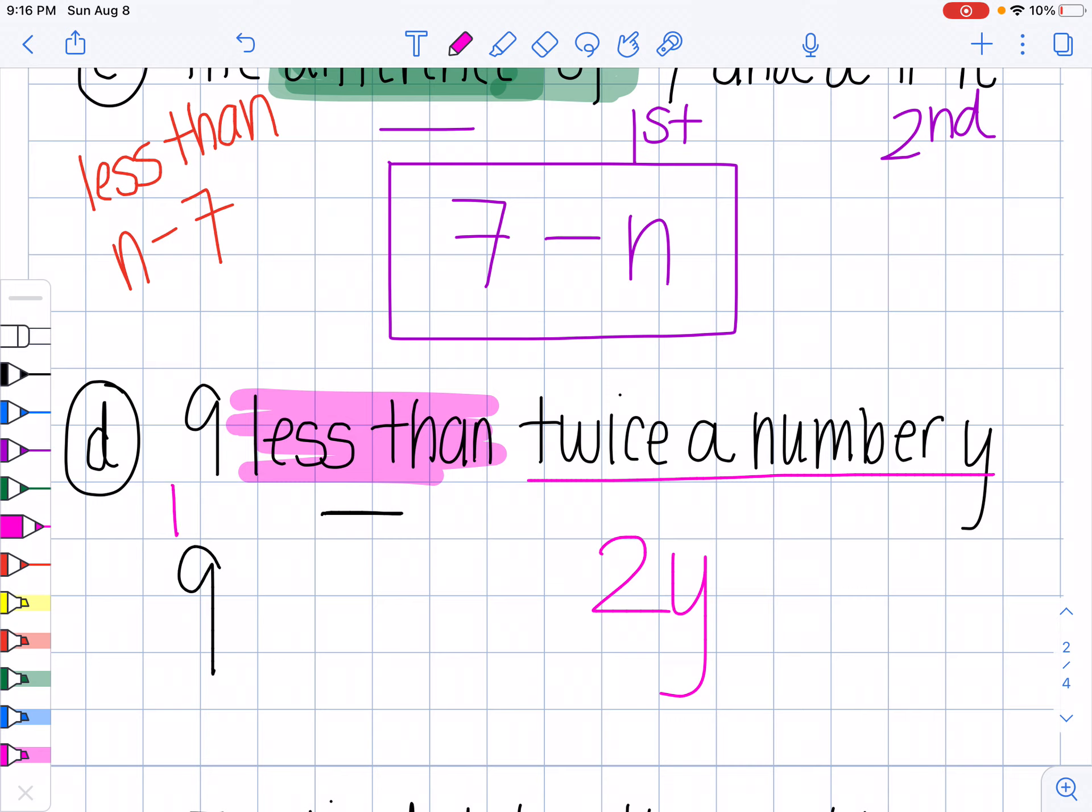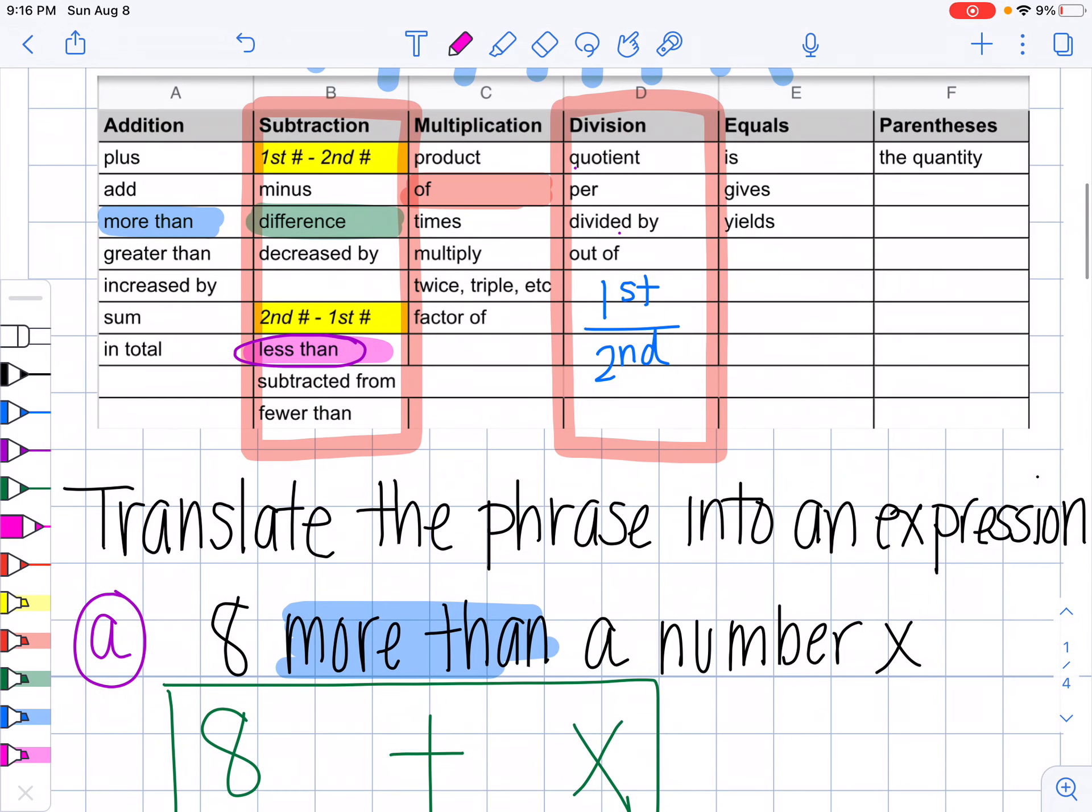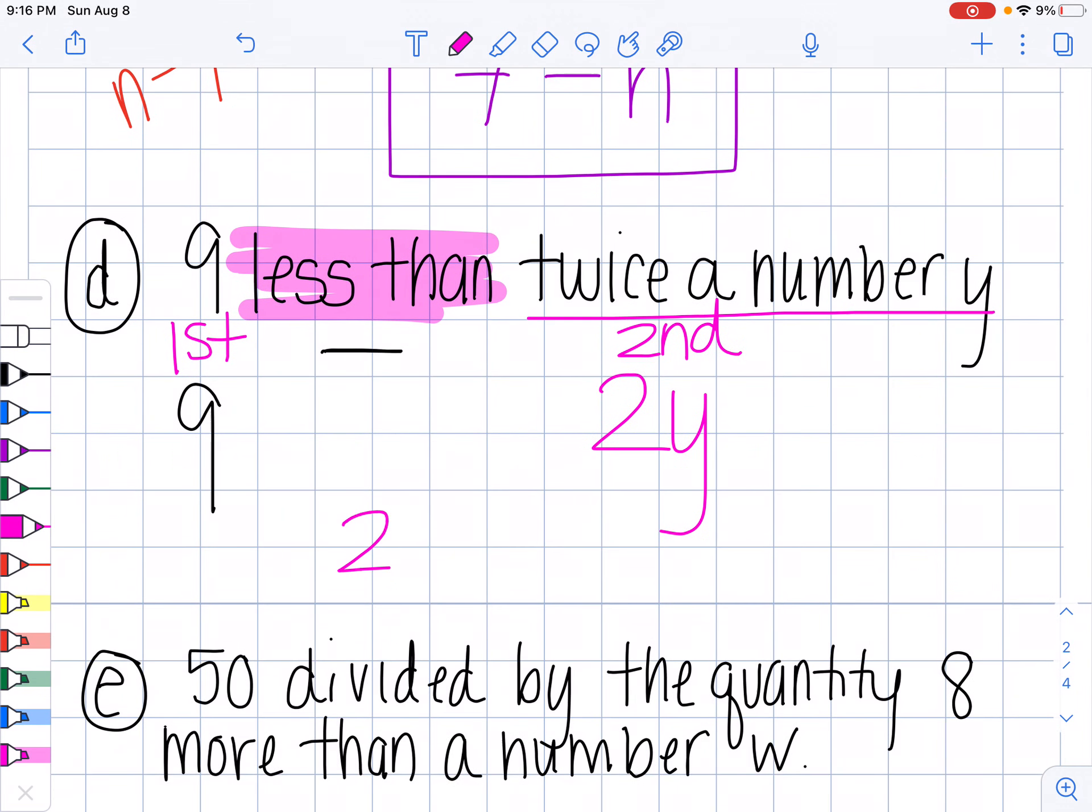So this is my first. And this is my second. When I'm using less than, less than means I have to take my second minus first. So this is going to become, really, two Y minus nine.